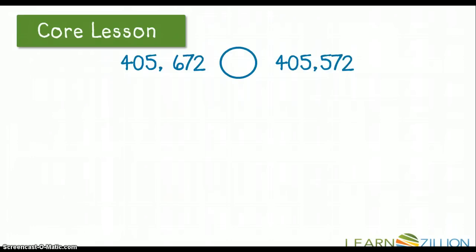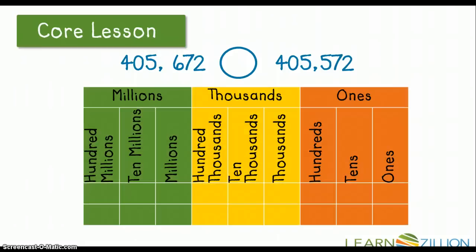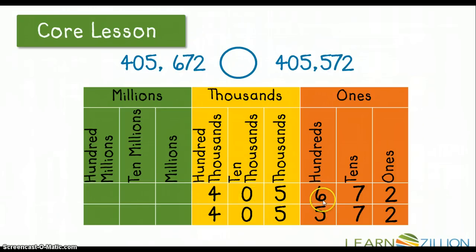Let's take a look at the numbers 405,672 compared to 405,572. I'm going to look at these numbers on a place value chart to make it easier on myself. I'm going to write those numbers into the place value chart and then compare them, starting with the digit with the largest value first. I notice that each number has a 4 in the hundred thousands place, so far these numbers are equal.